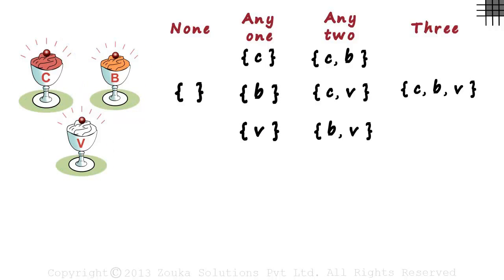Don't forget the original set we were looking at. The original set was chocolate, butterscotch and vanilla. This is the set of all kinds of ice cream we could choose from.